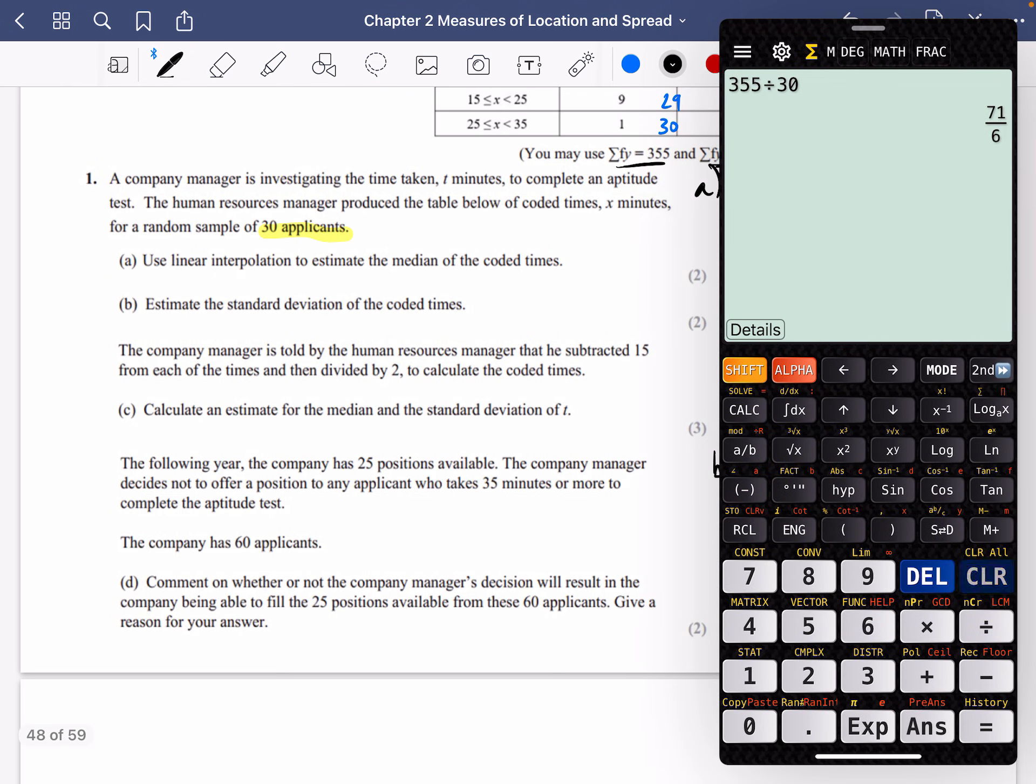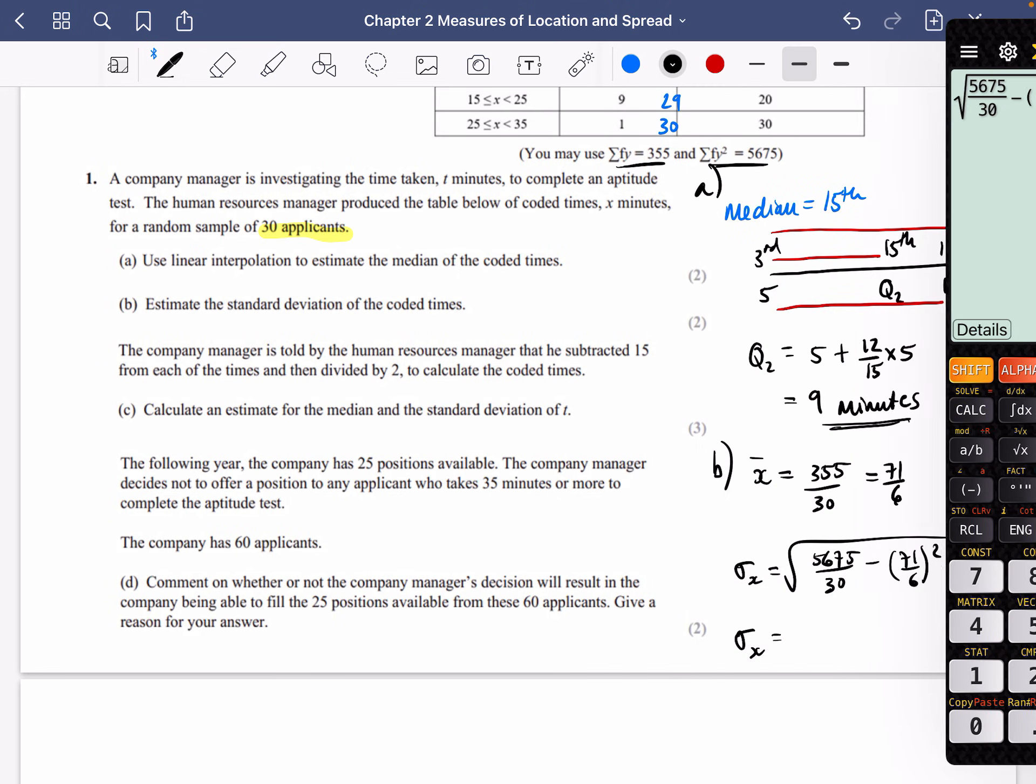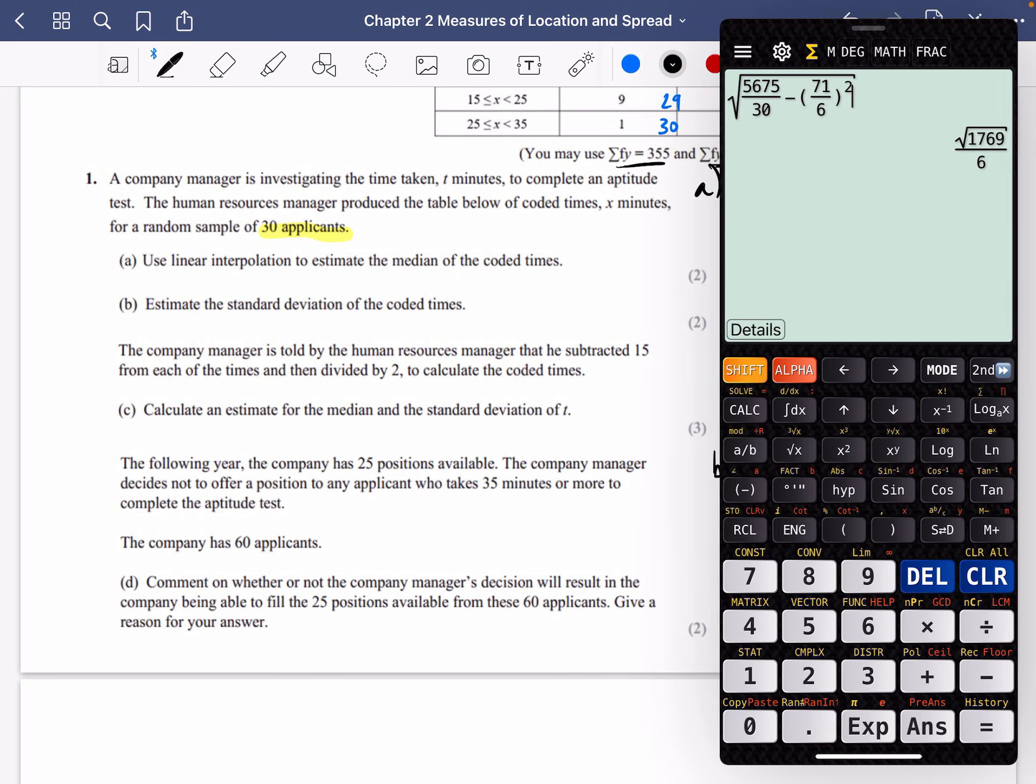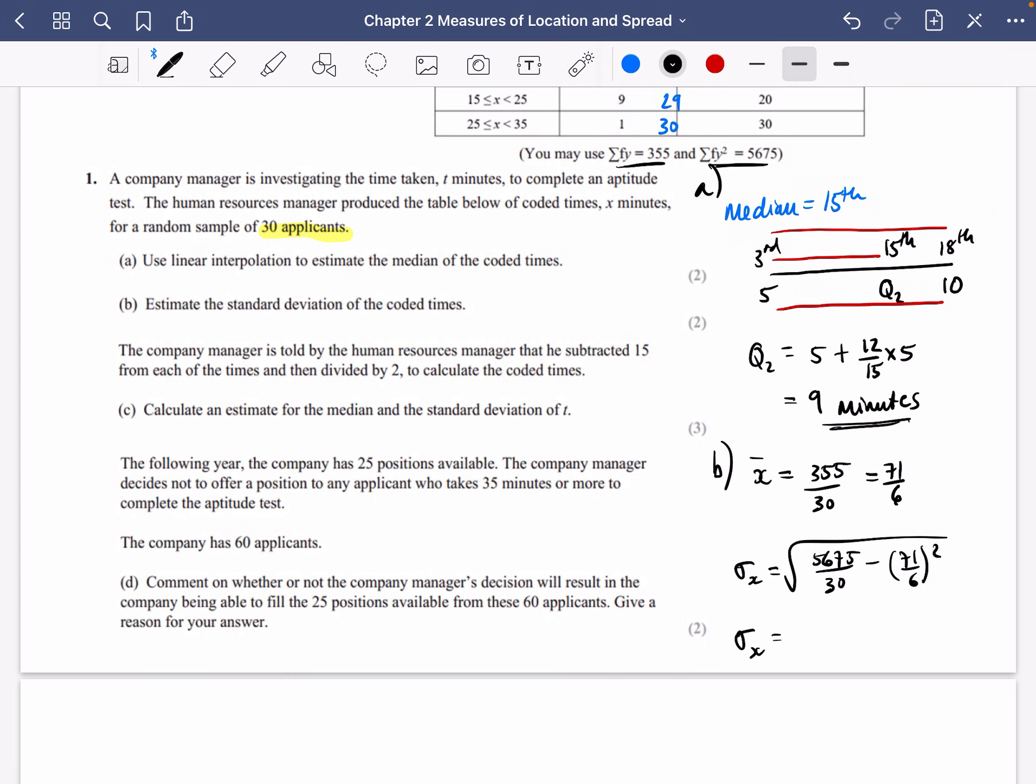So that's 5675 over 30, 5675 over 30 minus 71 over 6, all squared. That's correct, isn't it? And we get that that is 7.01, 7.01 minutes. And that's the two decimal places.